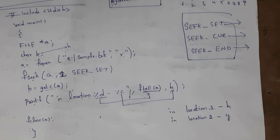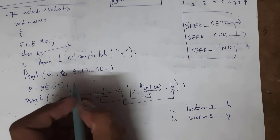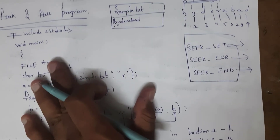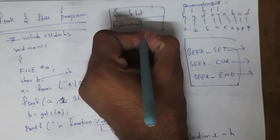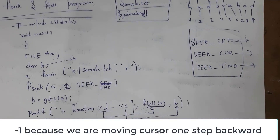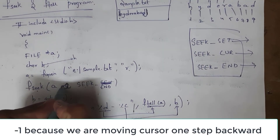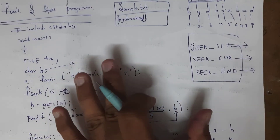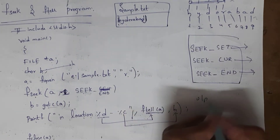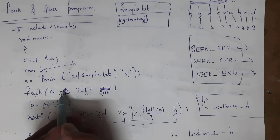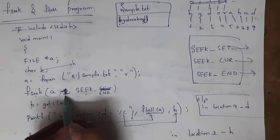Note that fseek starts counting from 0, whereas ftell starts from 1. For example, if I write 1 in place of 0 in fseek, I will get output as: in location 2, Y. If I write SEEK_END with -1, the cursor is placed at the last position, and I get output as: in location 9, D — since the last character of 'Hyderabad' is D.